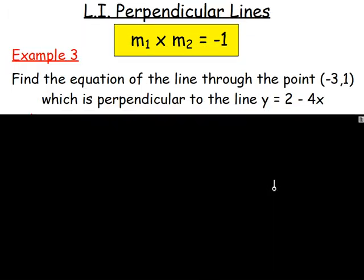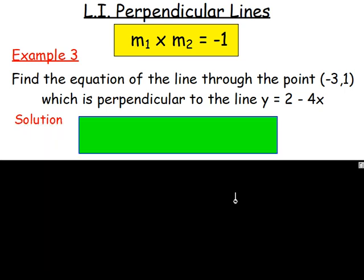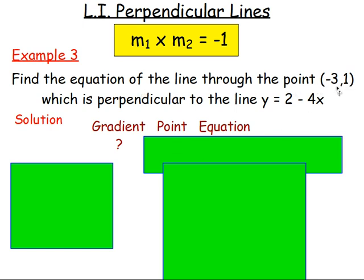Example three: find the equation of the line through the point negative 3, 1 which is perpendicular to the line y equals 2 minus 4x. When working out the equation of a line, think: gradient, point, equation. Do you know the gradient? No, not yet. Do you know a point? Yes — the point negative 3, 1 is given.